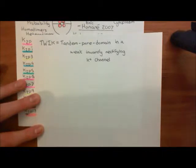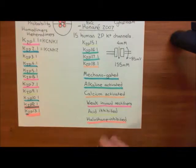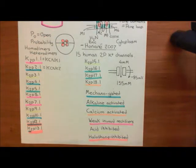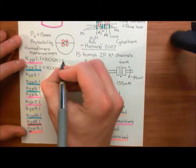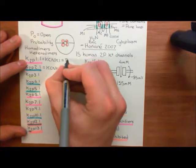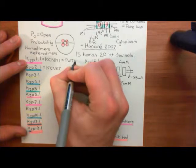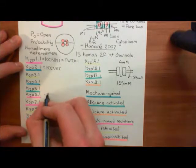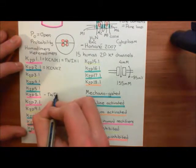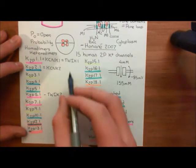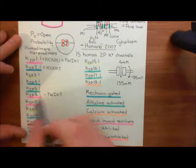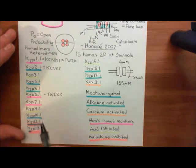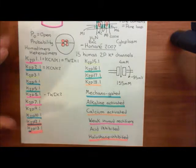Let's see which channel subunits are called TWIK channels - there are two. K2P1.1, also called KCNK1, is called TWIK1. And then we also have TWIK2, which is K2P6.1. In addition, K2P7.1 would be considered in the same family as TWIK1 and TWIK2, but it's not given the name TWIK3. There is very little evidence yet that K2P7.1 is even expressed at all - you have the gene for it, but whether it's actually expressed is still debatable.